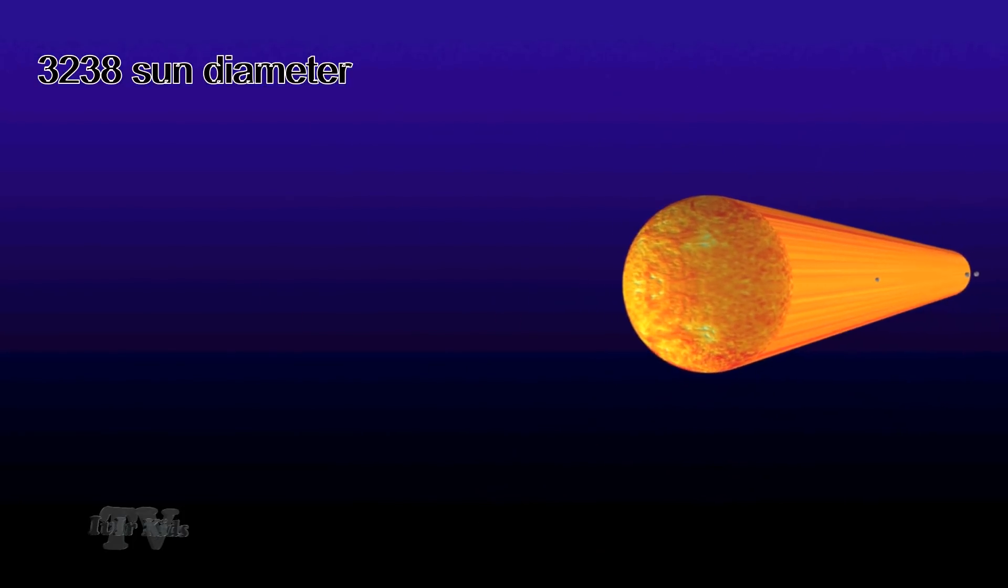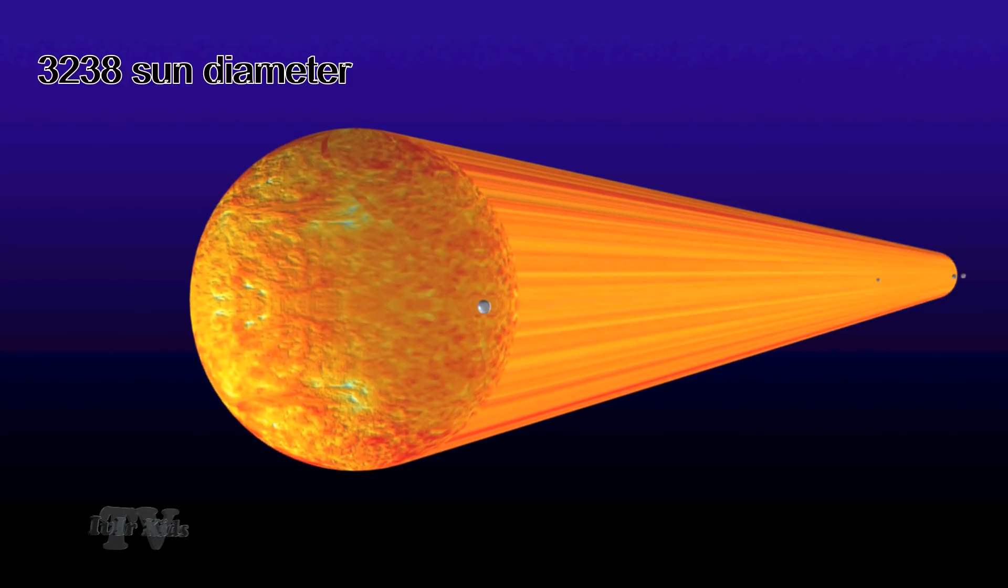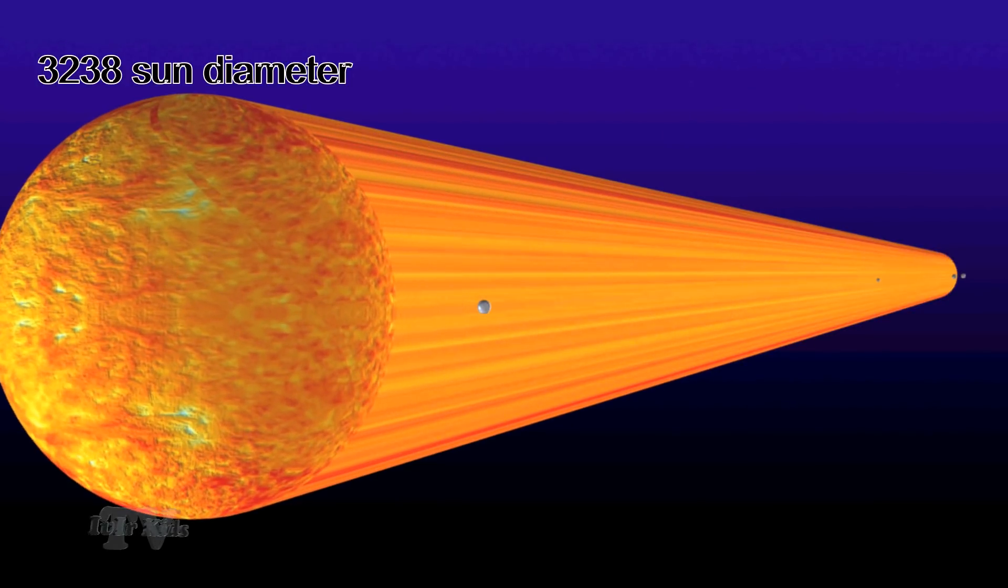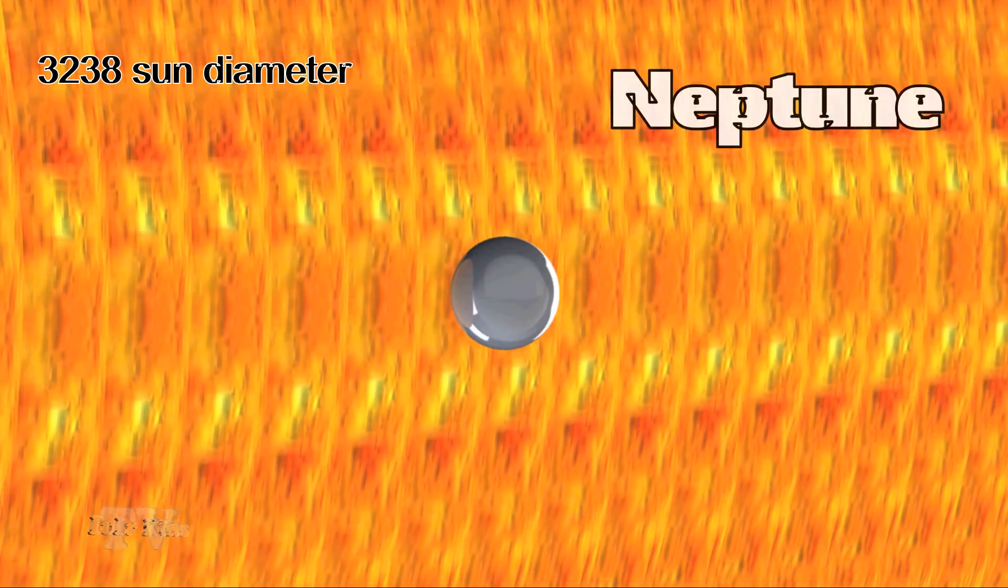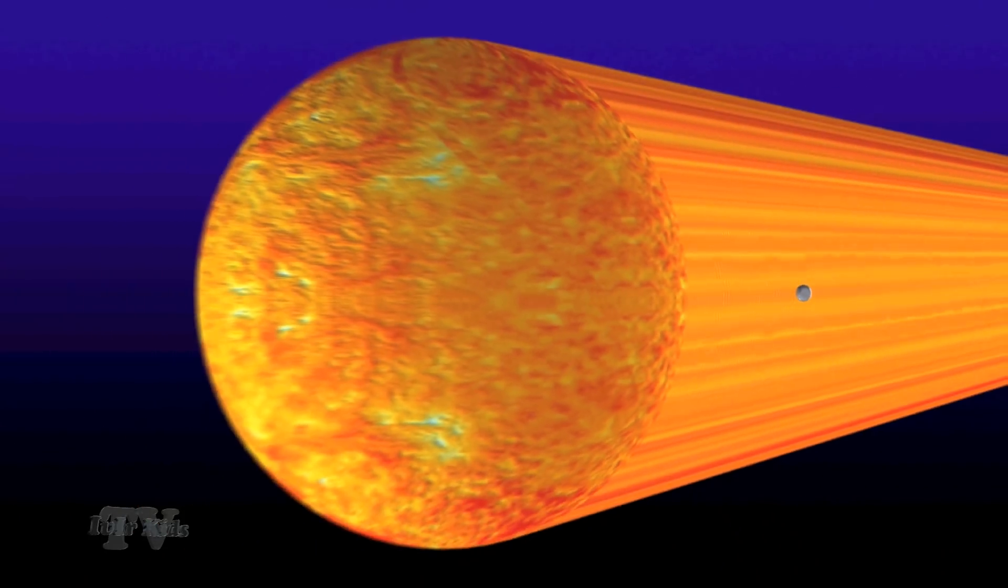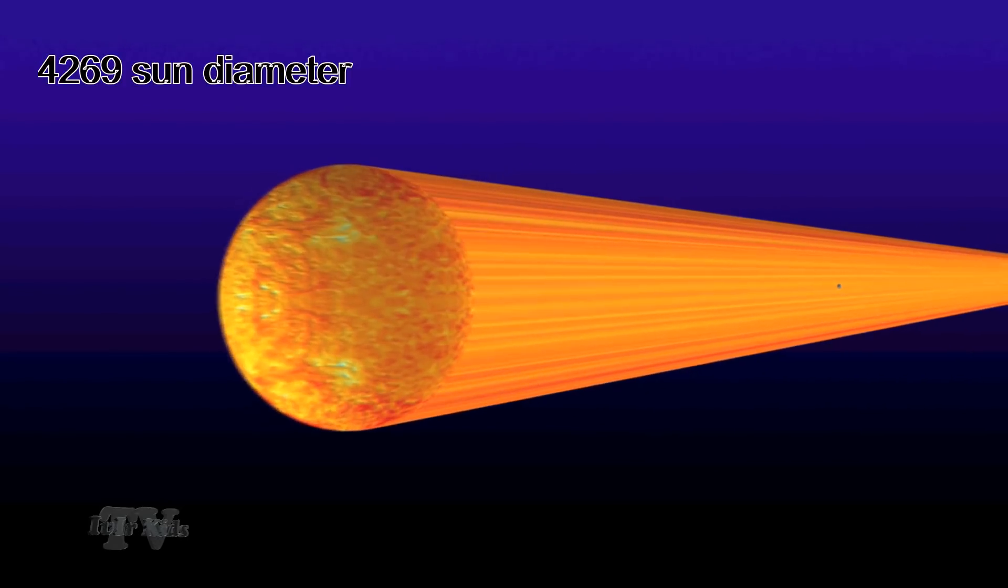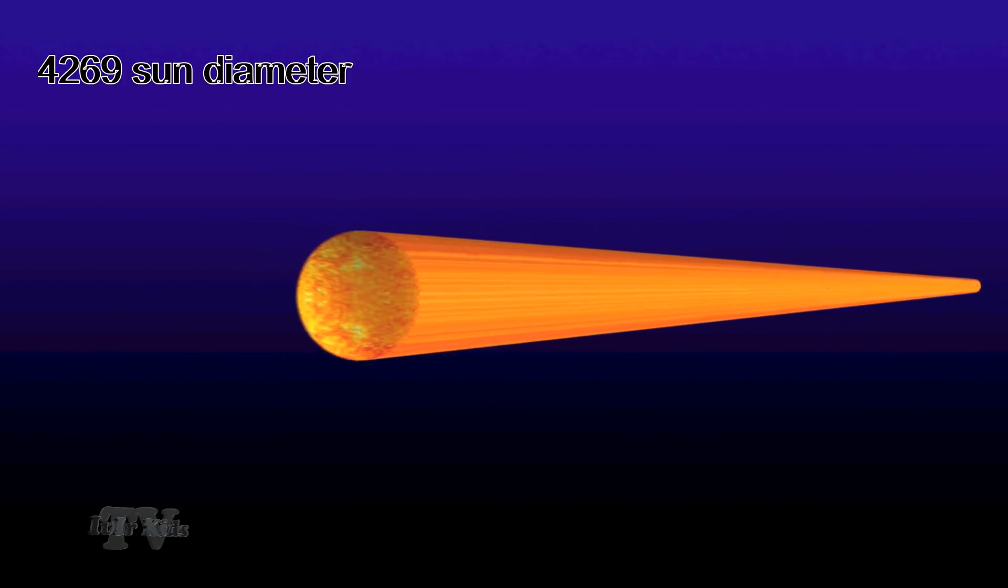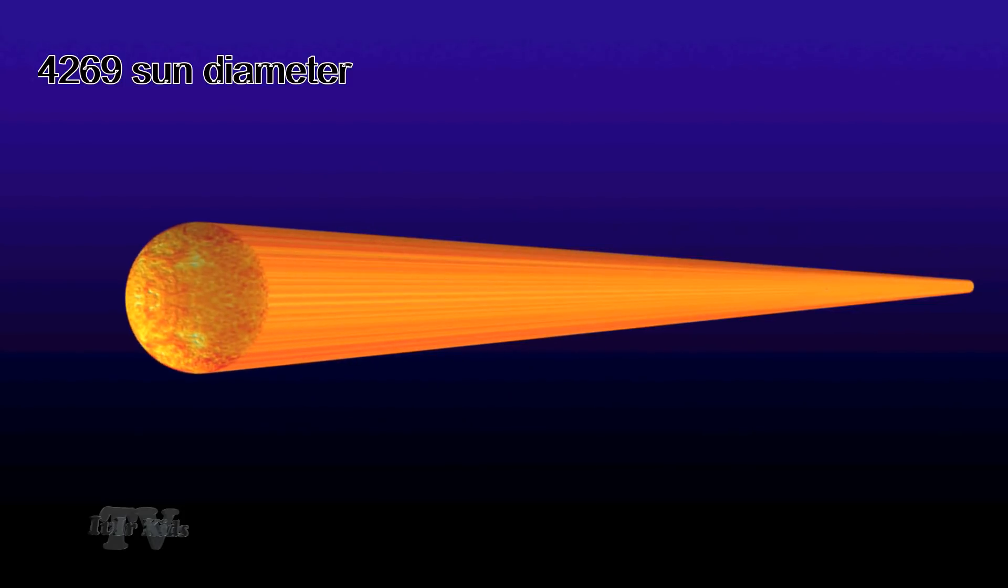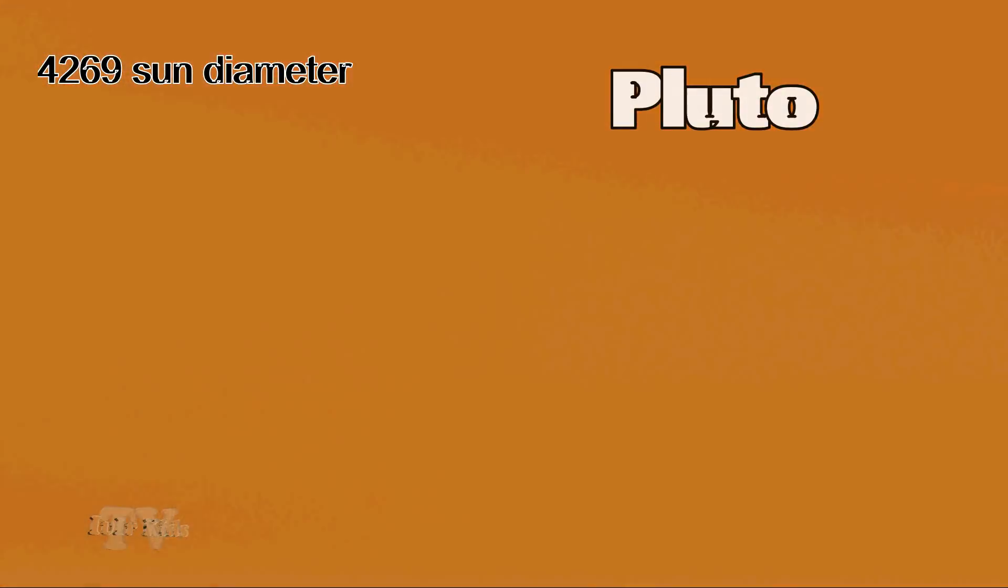The distance from the Sun to Neptune is 3238 diameters of the Sun. The distance from the Sun to the dwarf planet Pluto is 4269 diameters of the Sun.